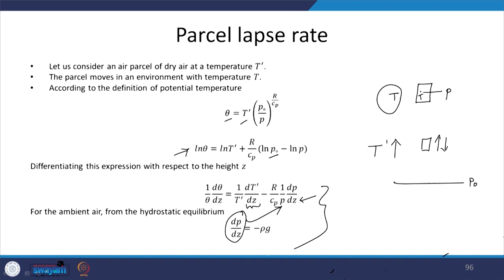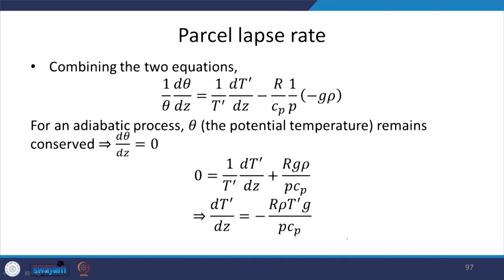Combining these two expressions, we get: 1 over theta times d theta by dz equals 1 over T prime times dT prime by dz minus R over Cp times 1 over P times minus g rho. For an adiabatic process, when we discussed potential temperature, we noted its invariance: dQ equals 0, meaning heat taken or given out is 0, and this ensures the potential temperature remains constant.